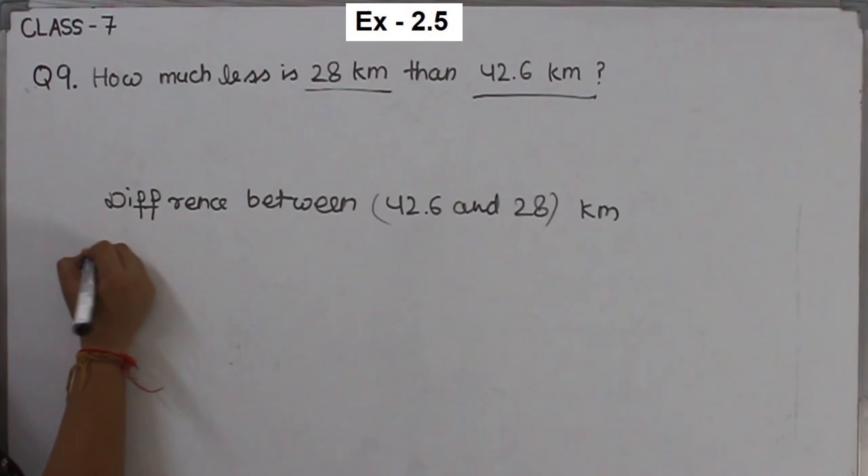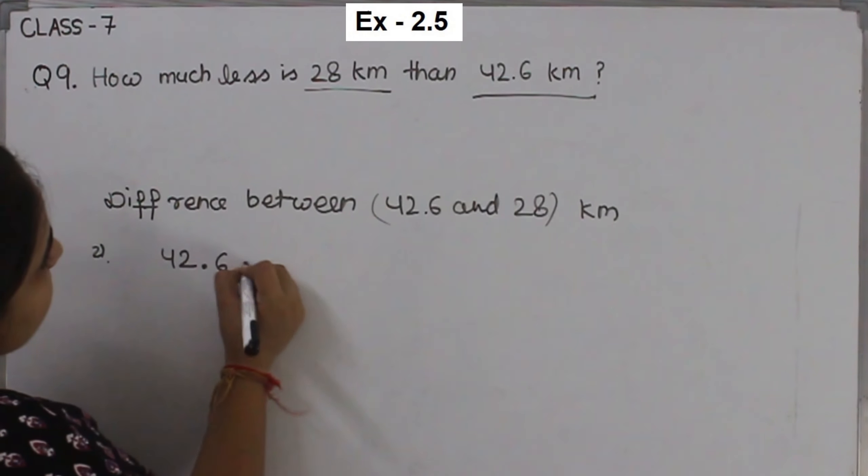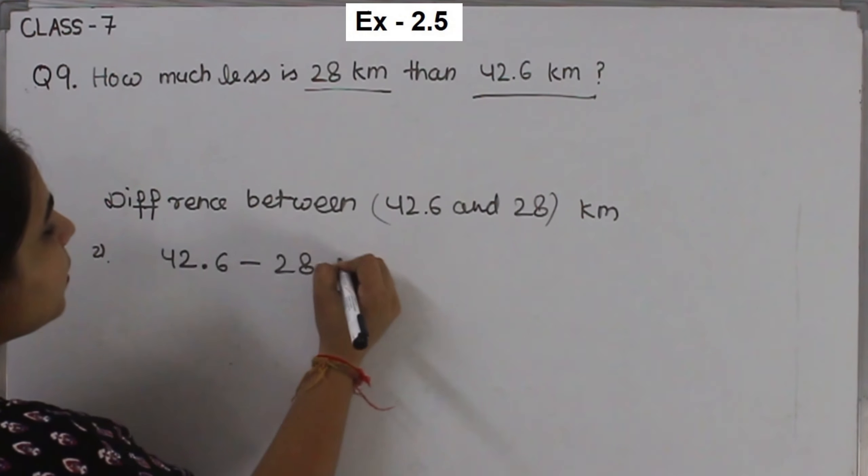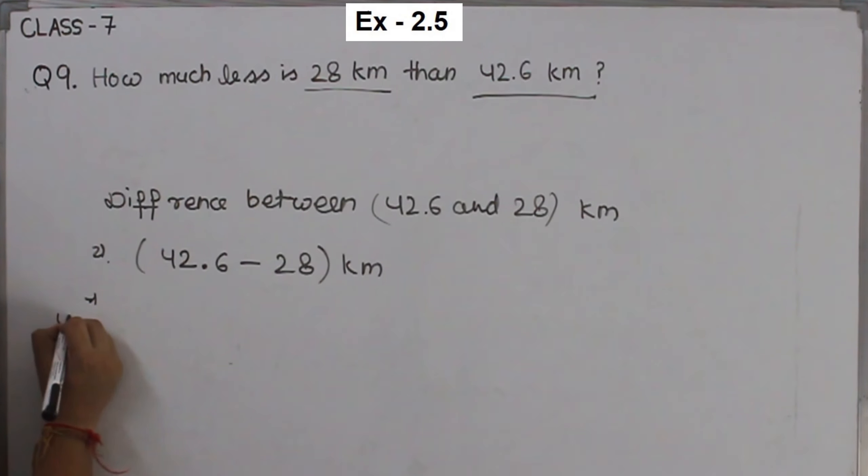So for that one we have to start subtracting. 42.6 minus 28 km. Now 42.6 and here is the 28.